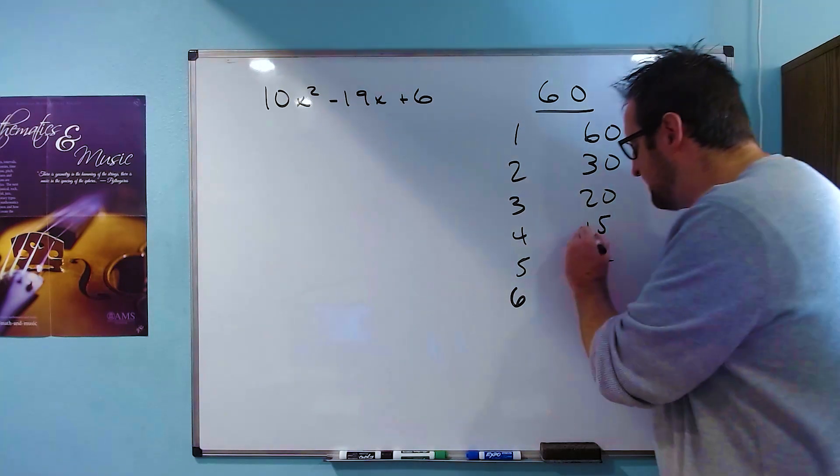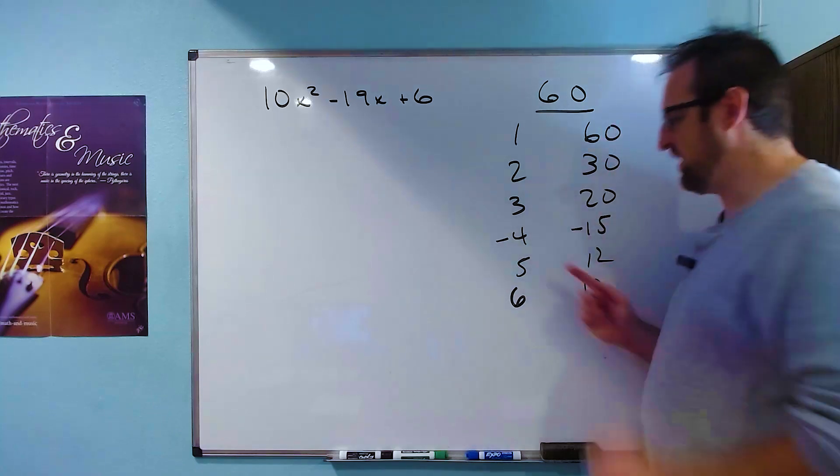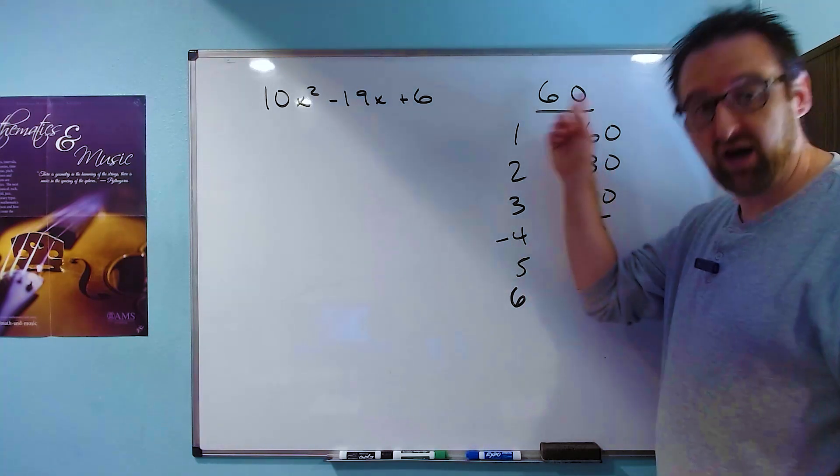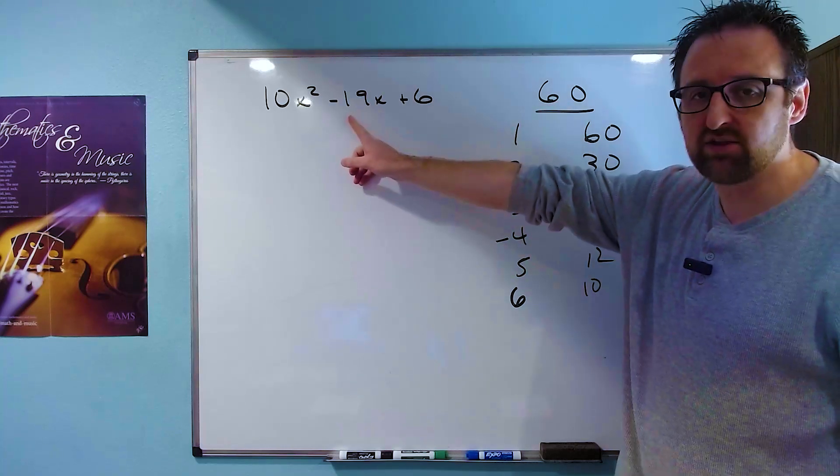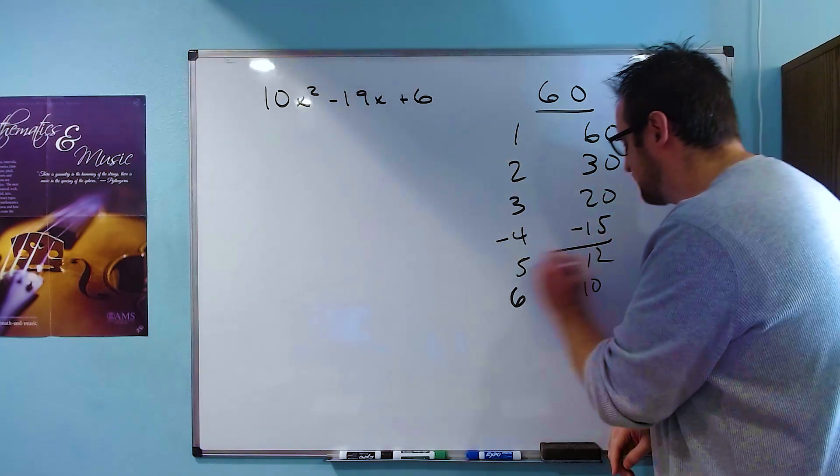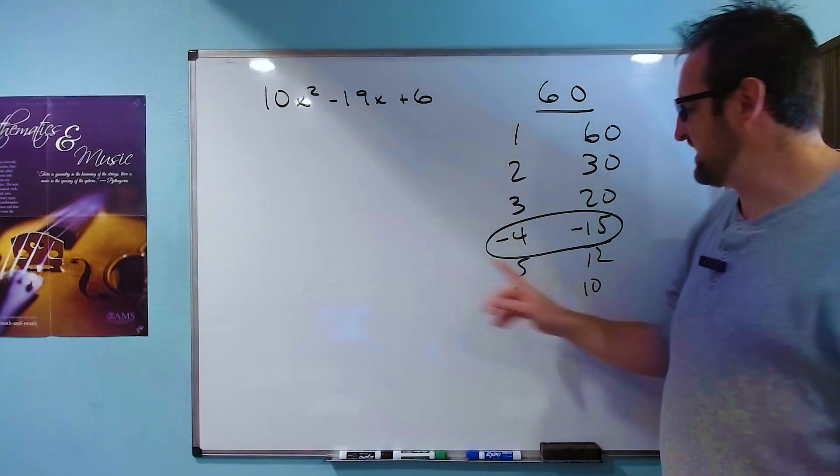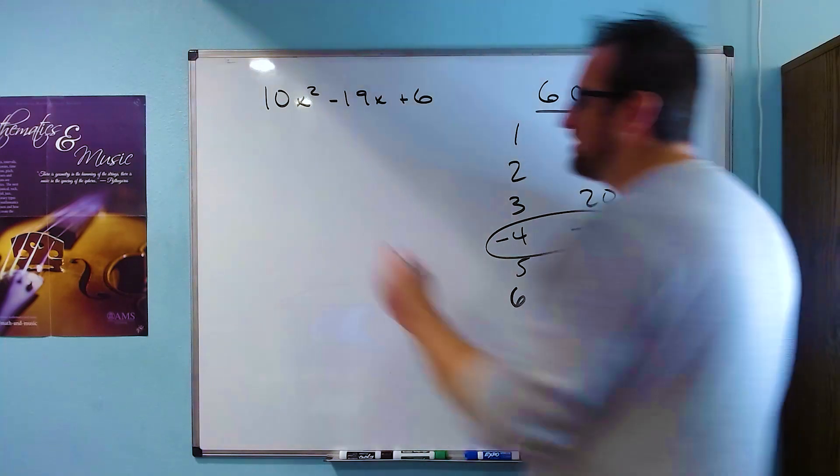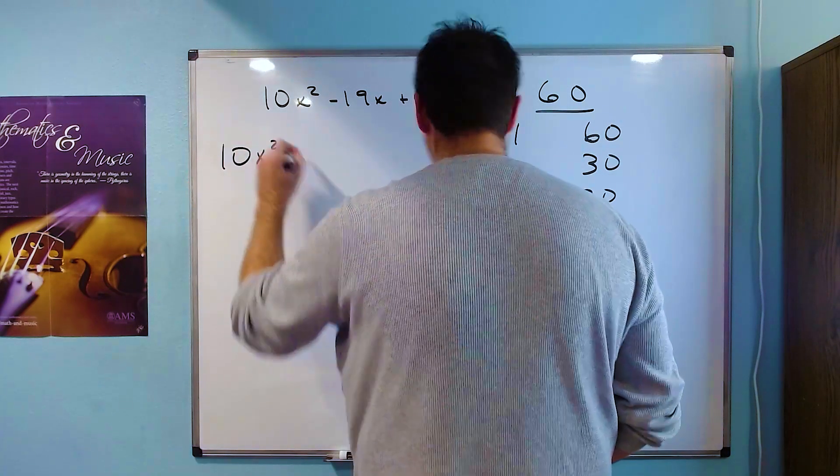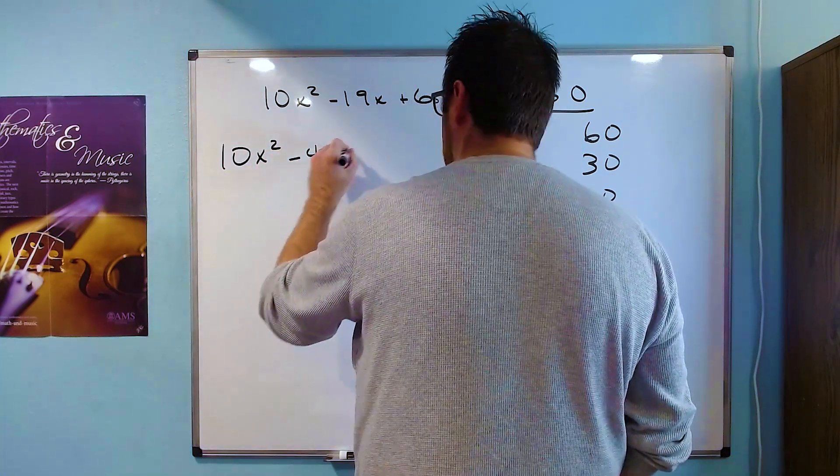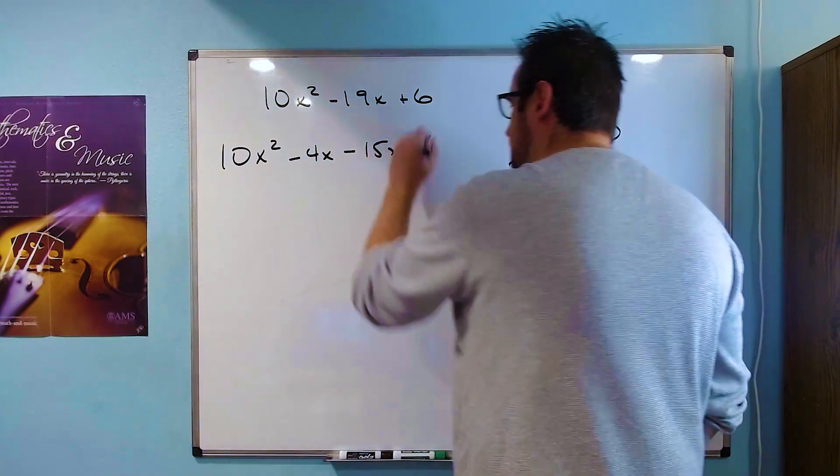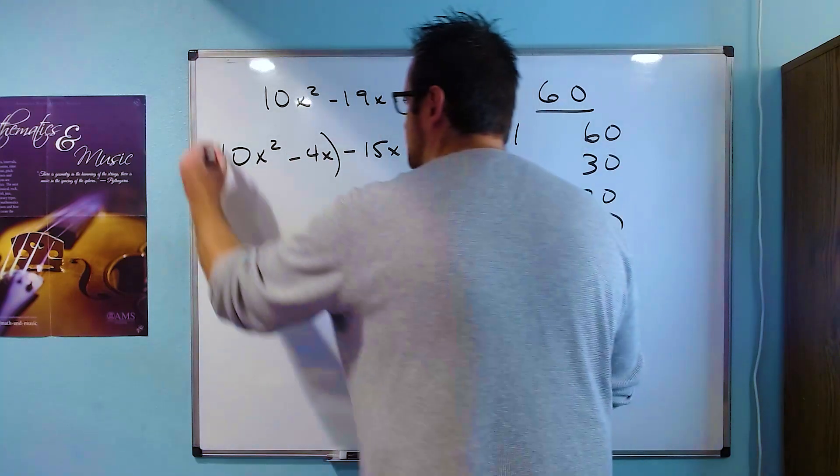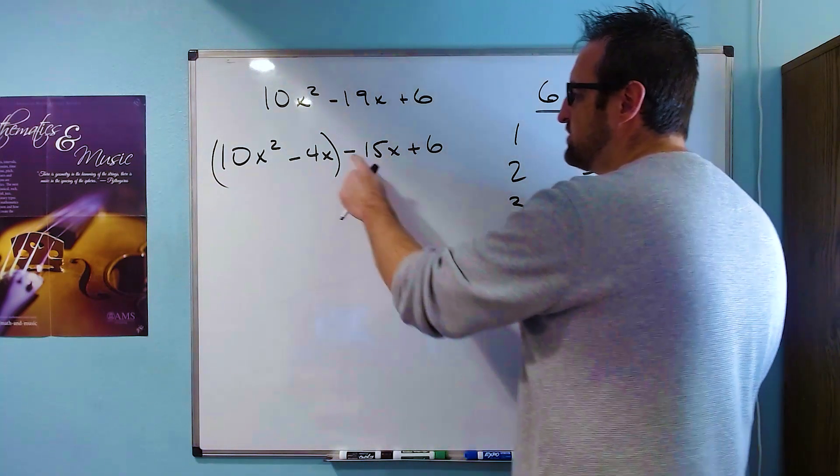If you said negative 15 and negative 4, you're right. Now negative 15 and negative 4 multiply together to give positive 60, but add together to give negative 19. So we're going to replace our negative 19x with these two guys with an x on them. So we'll have 10x² - 4x - 15x + 6.